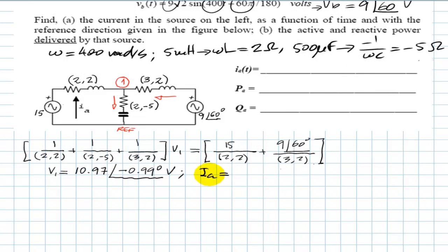This current is then (15 - V1) divided by the impedance of that branch (2+j2). That current is 1.43 amps RMS, with phase negative 42.3 degrees.